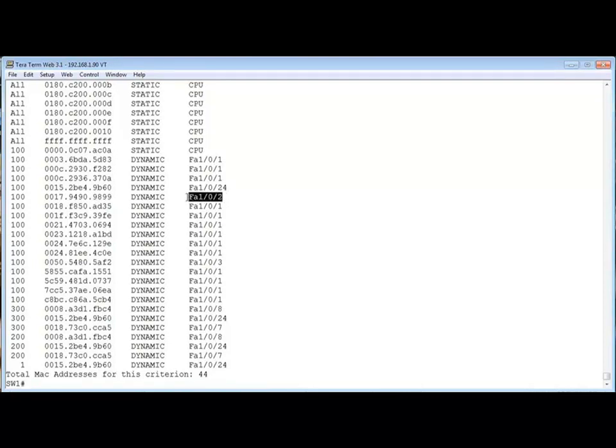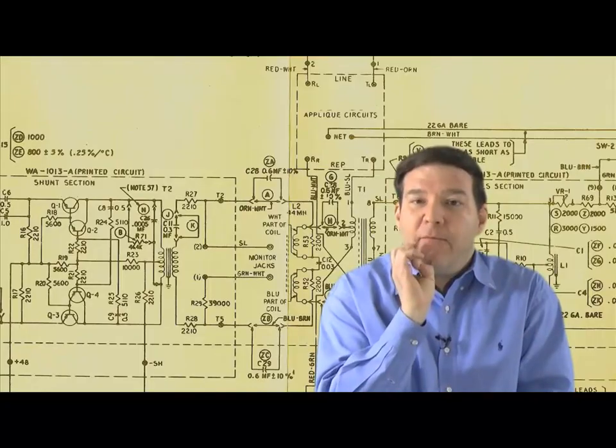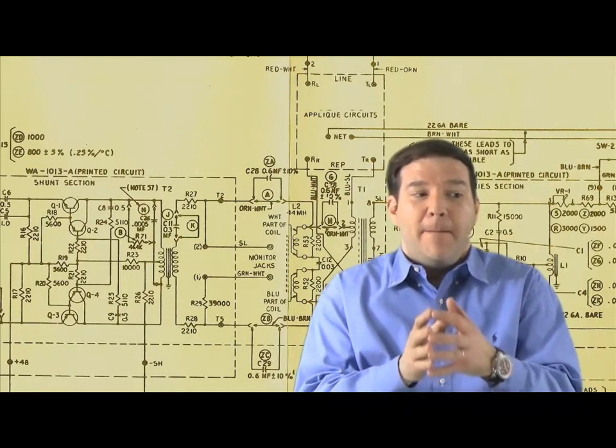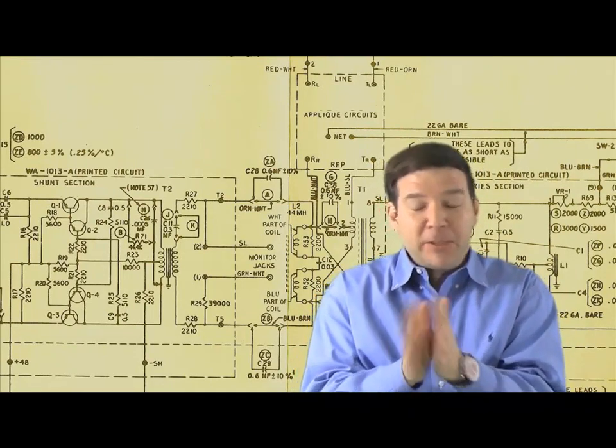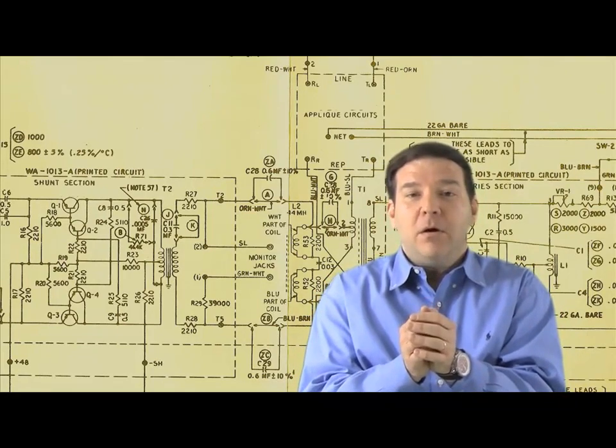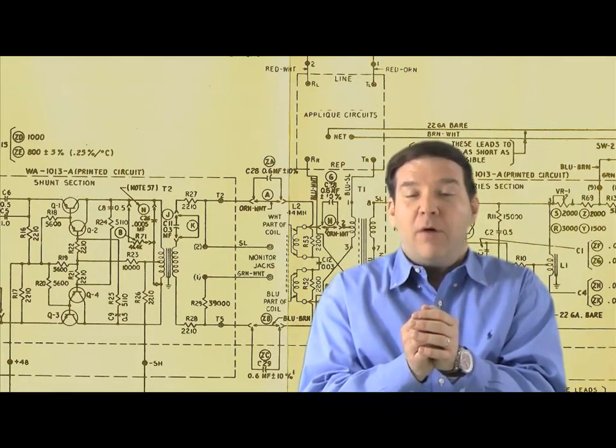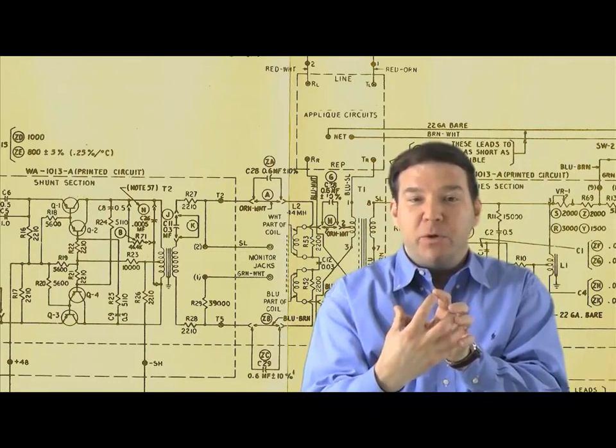And something else I want you to notice, take a look at the FastEthernet 1-0-1 port. There are several MAC addresses learned off of that one port. Is that possible? It sure is. You see, what's happening here, it's not just we can have one device off of a port. There's a switch connected off of a switch port in this case. And that's perfectly fine. We can learn devices that live off of a switch connected into a switch port.